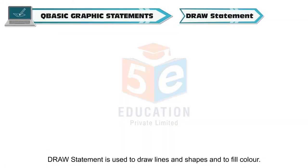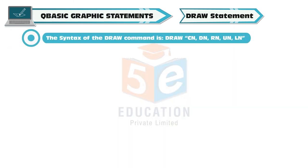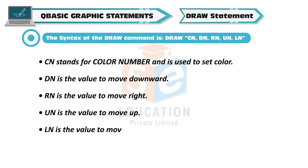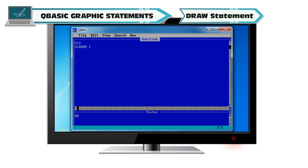Draw statement is used to draw lines and shapes and to fill color. The syntax of the draw command is: DRAW "Cn, Dn, Rn, Un, Ln". CN stands for color number and is used to set color. DN is the value to move downward. RN is the value to move right. UN is the value to move up. LN is the value to move left. Example of drawing a house shape: CLS, SCREEN 1, DRAW "E50,F50,L100", DRAW "D50,R100,U50", END.